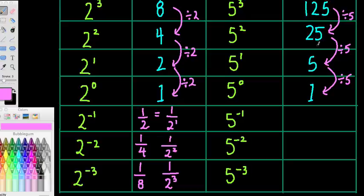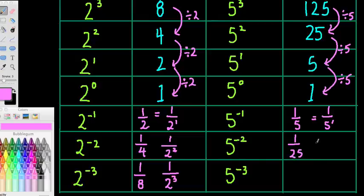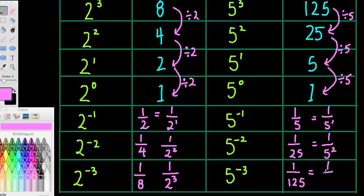Let's do the other one. We're dividing by 5, so we'd have 1 over 5. If you divide that by 5, you get 1 over 25, which is the same as 1 over 5 squared. Do that again and we get 1 over 125, which is the same as 1 over 5 cubed.